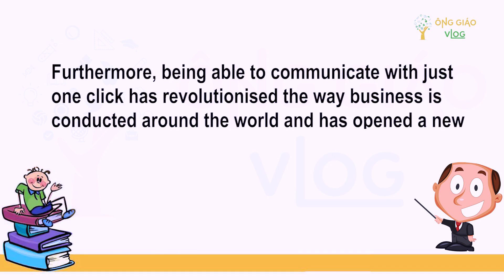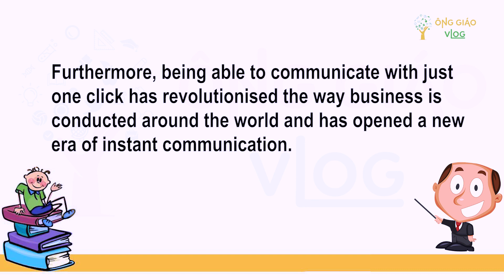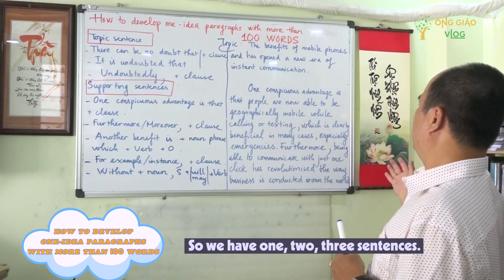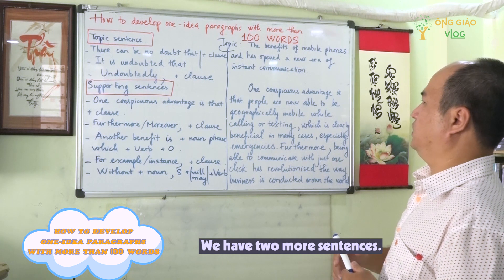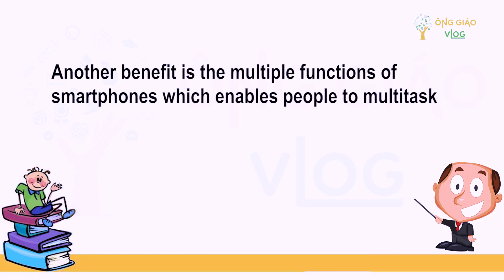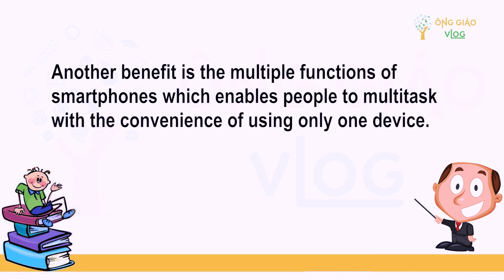The third sentence: 'Furthermore, being able to communicate with just one click has revolutionized the way business is conducted around the world and has opened a new era of instant communication.' We now have three sentences. The fourth: 'Another benefit is the multiple functions of smartphones, which enables people to multitask with the convenience of using only one device.'